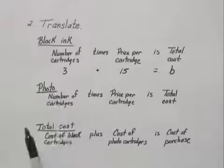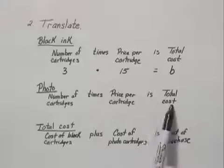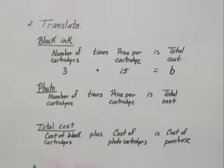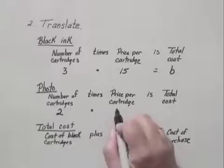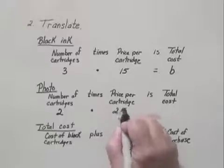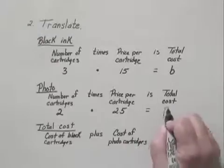For the photo cartridges, we need to translate the number of cartridges times the price per cartridge is the total cost. In this case, there were two cartridges purchased, times the price per cartridge was $25, and that equals the total cost, which we said was going to be P.